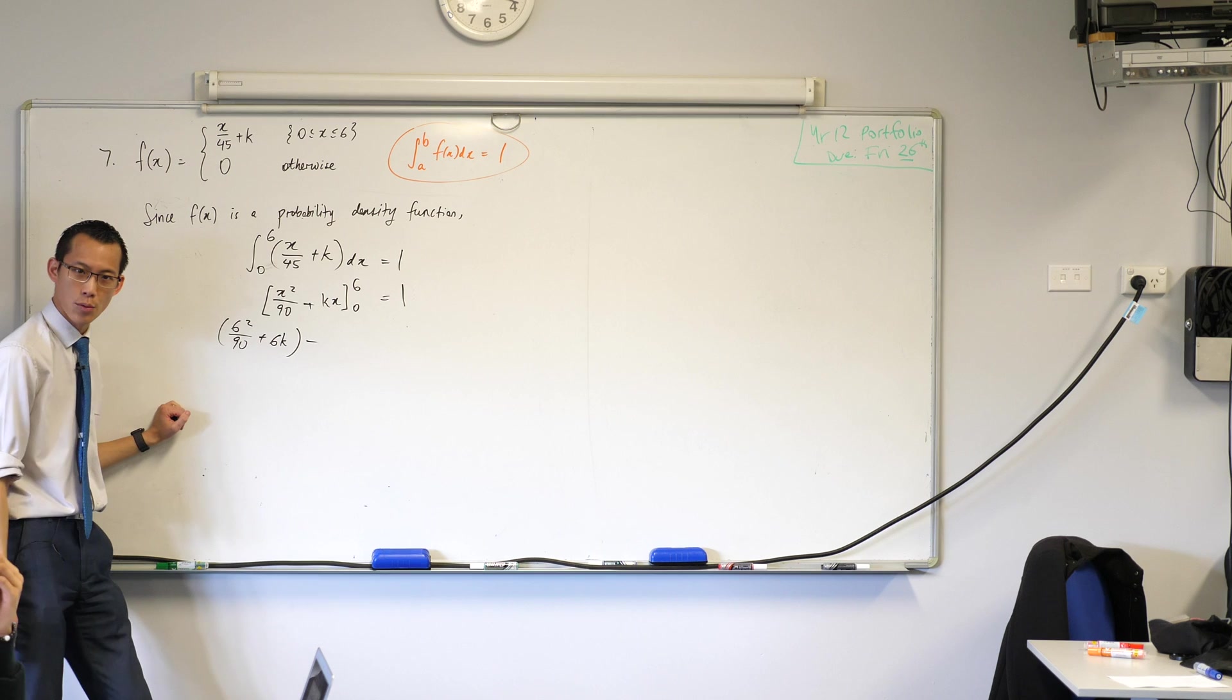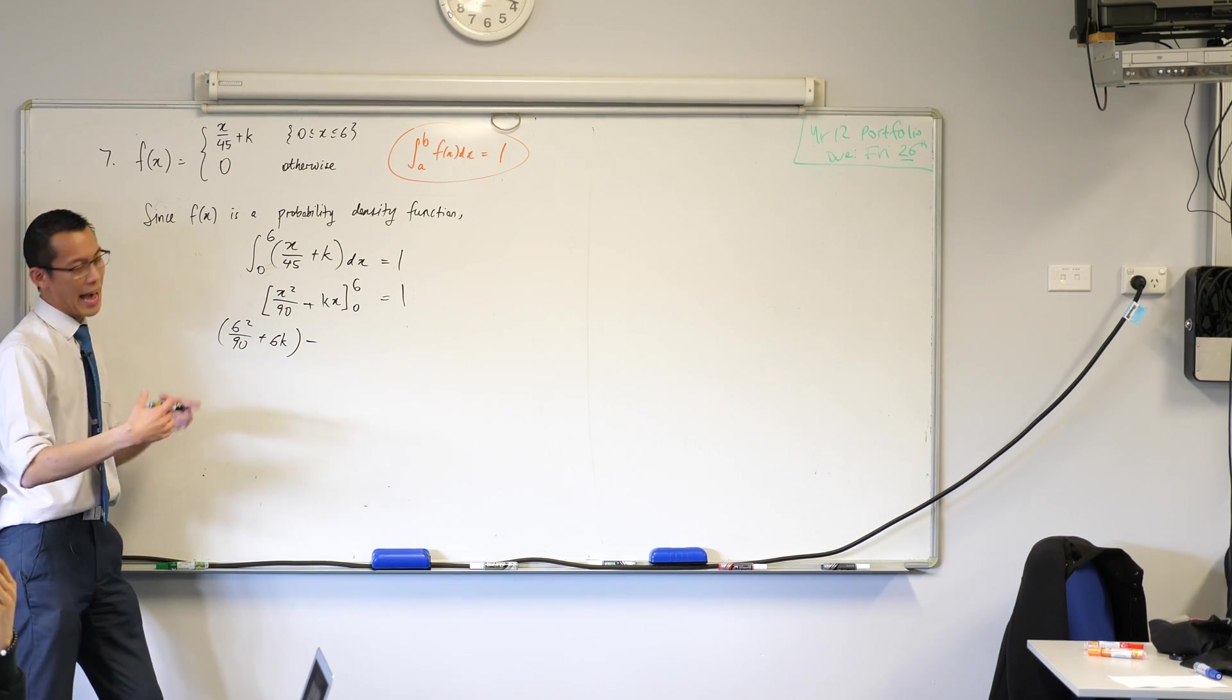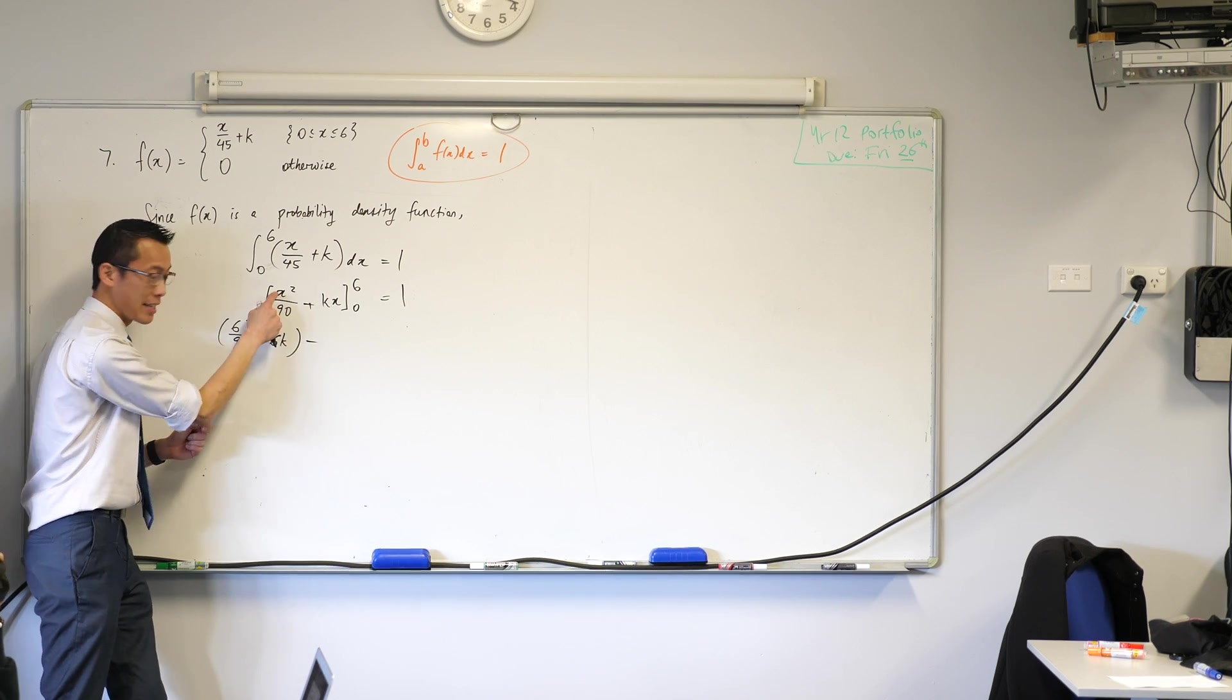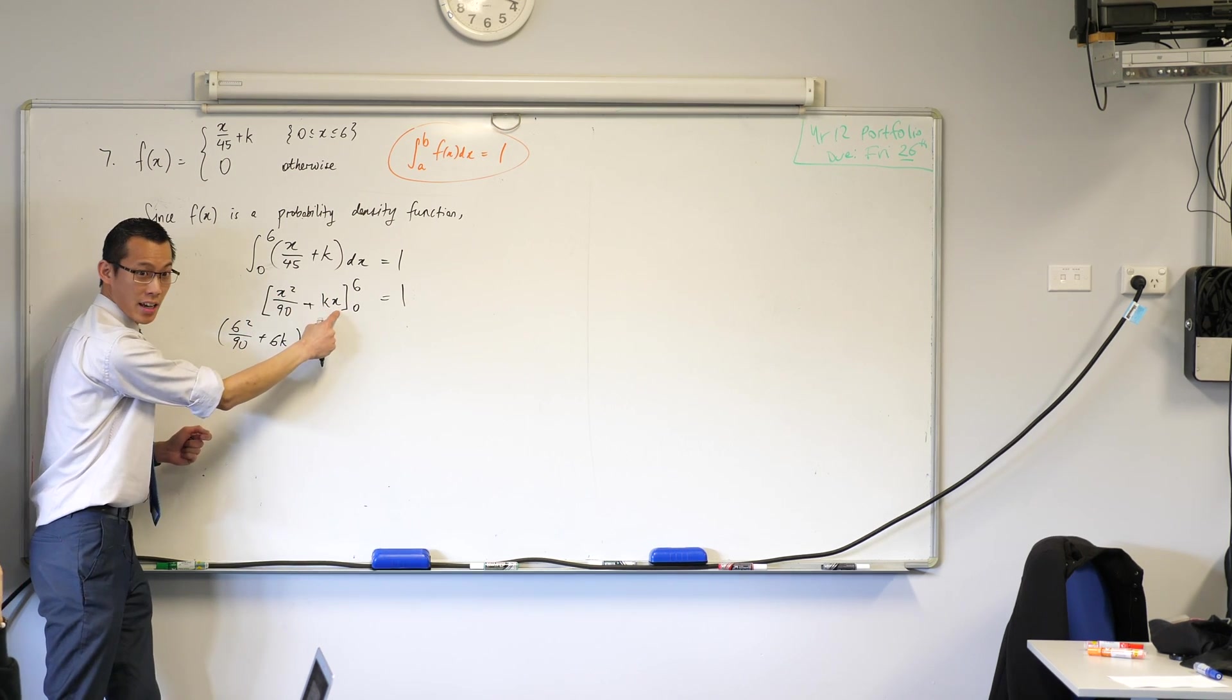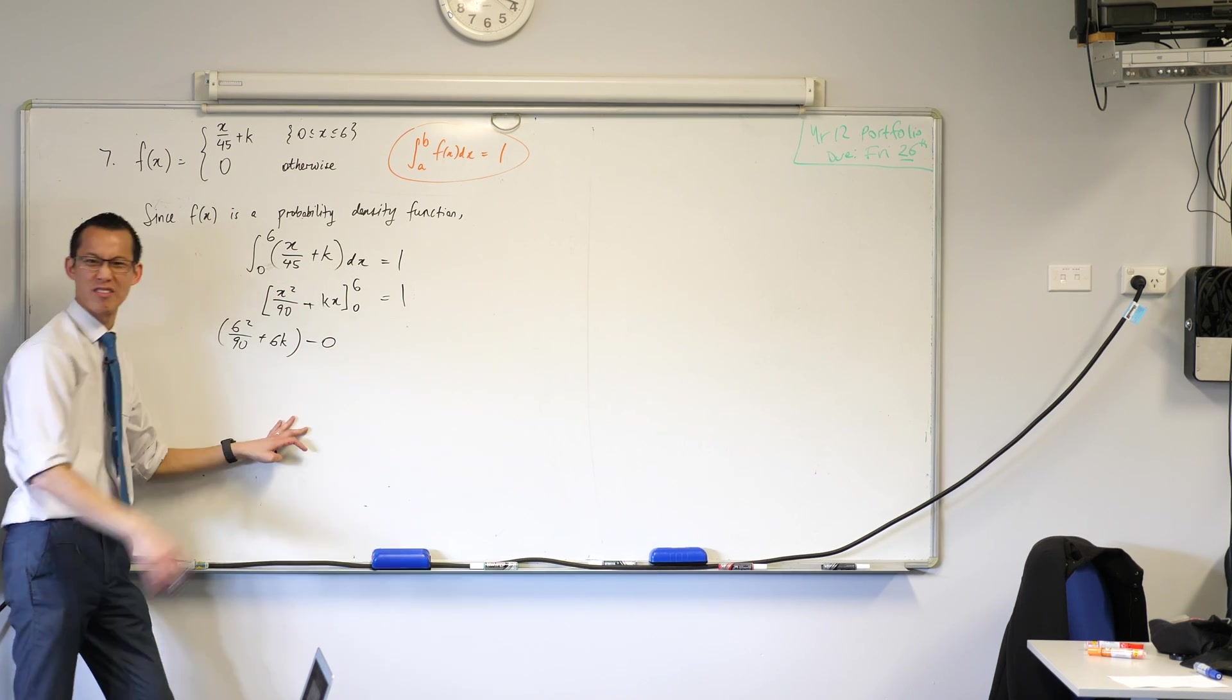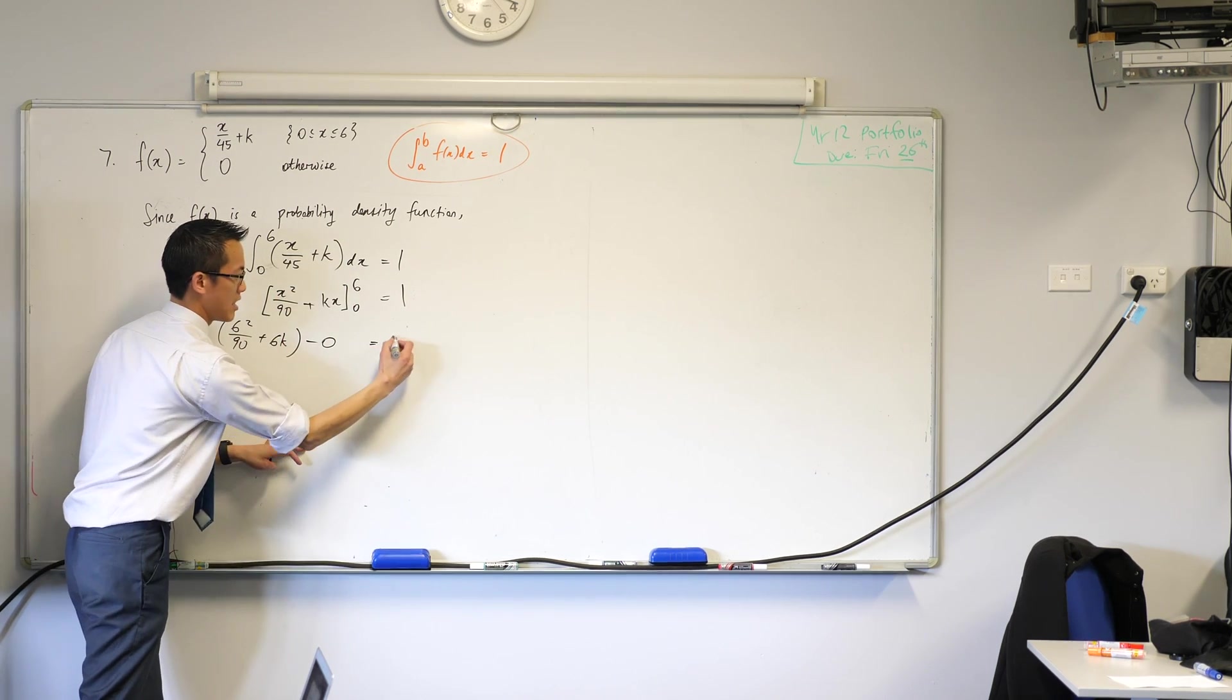And then, I'm subtracting my lower boundary. And I notice, as happens frequently, there are x terms in both of these spots. So when the 0 goes in here, and then when the 0 goes in here, it all just disappears. So I'm just subtracting 0. Is that okay? That's nice. That's equal to 1.